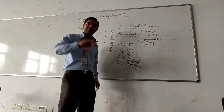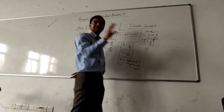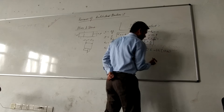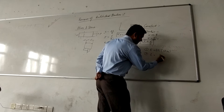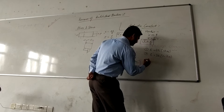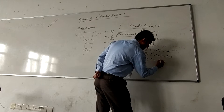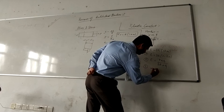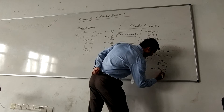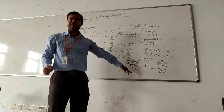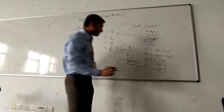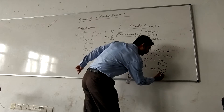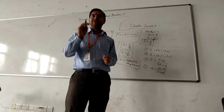These are the four elastic constants. You have to remember the relationships between them. The first relation: E = 2G(1 + mu). The second: E = 3K(1 − 2mu). The third: E = 9KG / (3K + G). And mu = (3K − 2G) / (6K + G). These are the direct relationships between all the elastic constants.